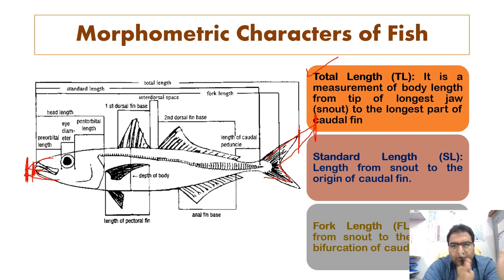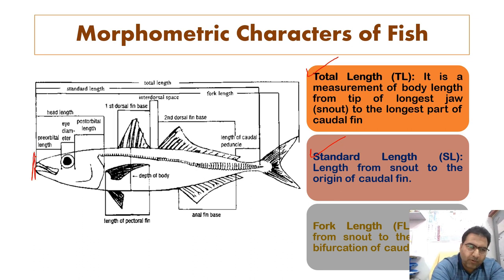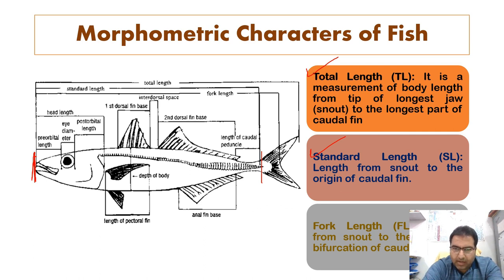The second measurement is standard length. It is the length from the snout to the origin of the caudal fin — that is, from the tip of the snout to the base where the caudal fin originates. We call this the standard length.